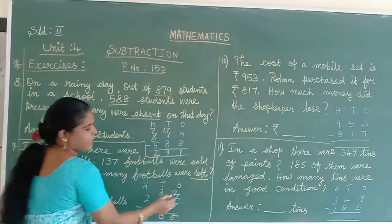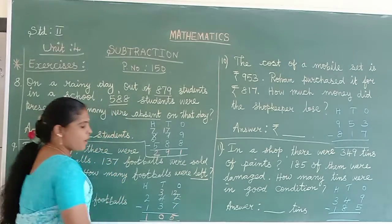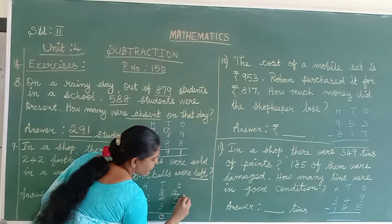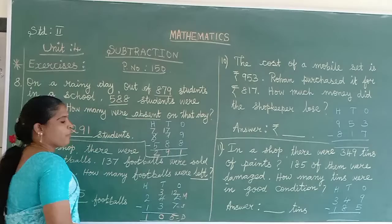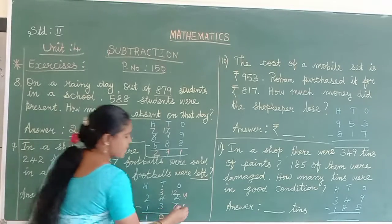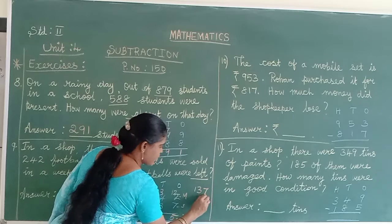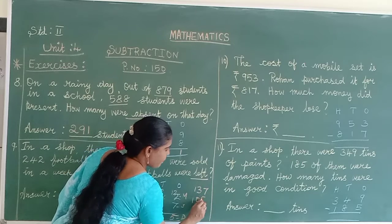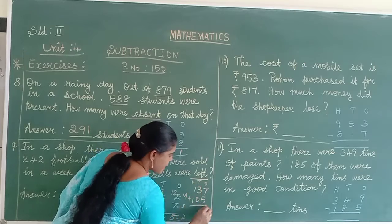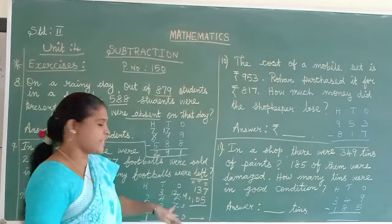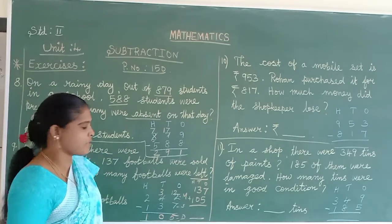How should we do the verification? This is minuend, this is subtrahend, this is difference. We should find the minuend. Minuend means subtrahend plus difference. 137 plus 105. Make a column and do that. We can get the minuend, and the same number means our answer is correct. This is verification also.